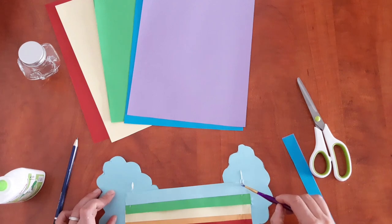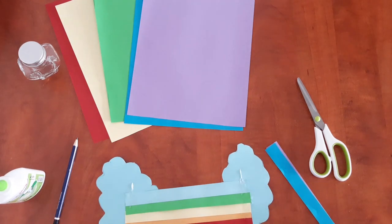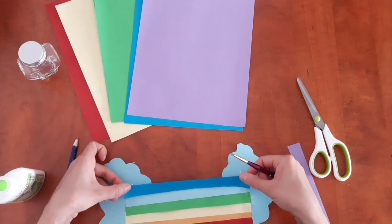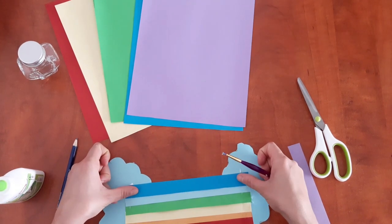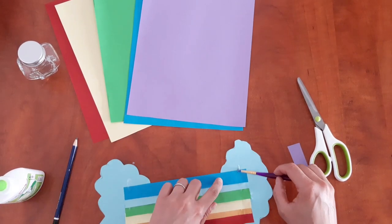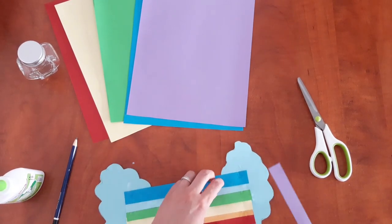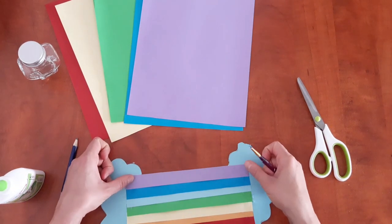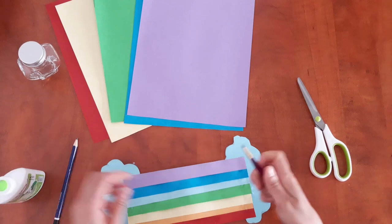Then the next one will be indigo strip. Add a little bit more glue. And keep in mind, glue only the edges, not the entire strip. And the last one is the violet strip.